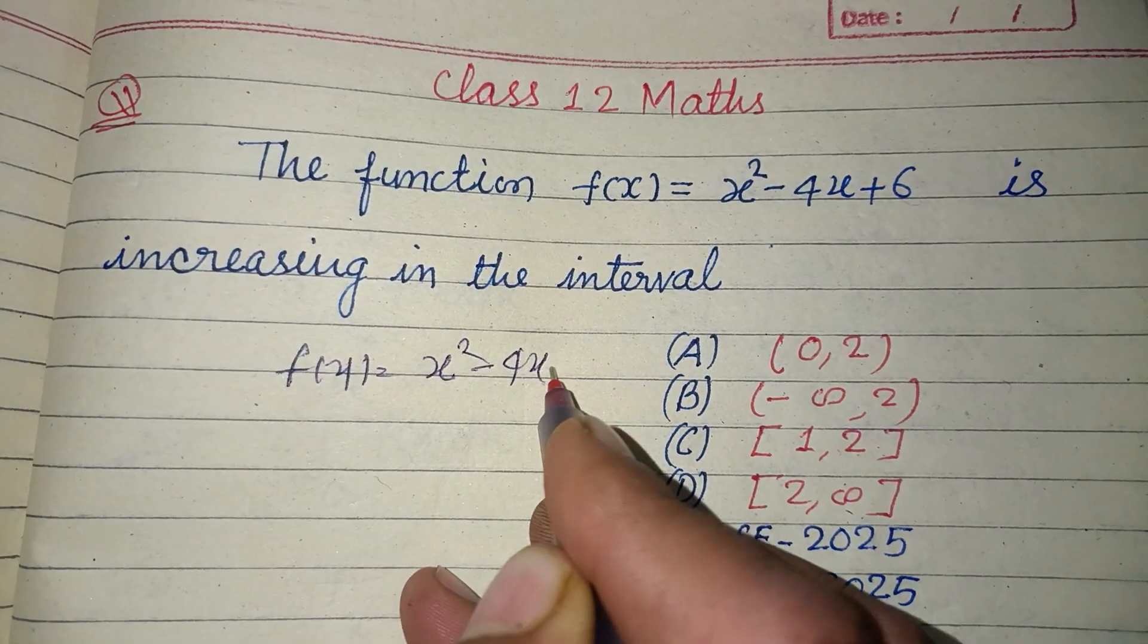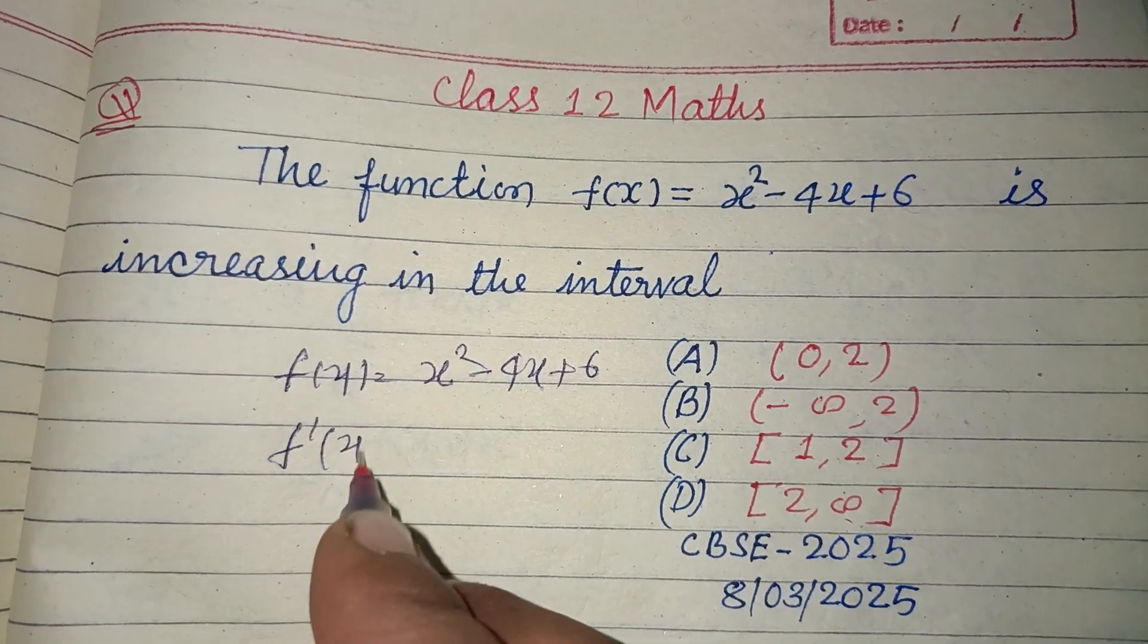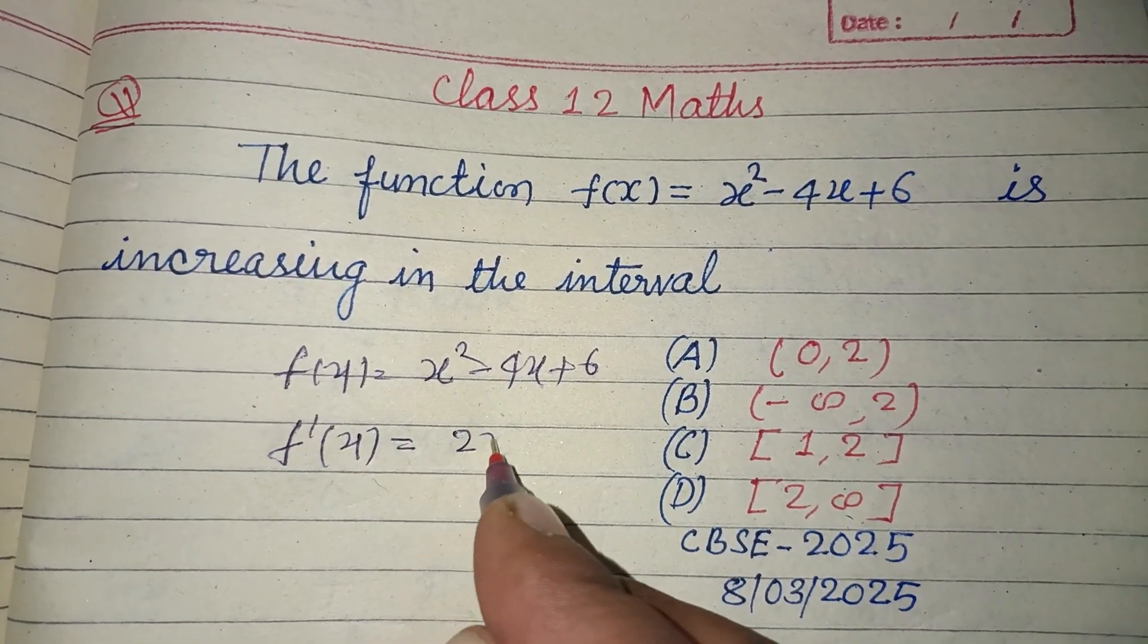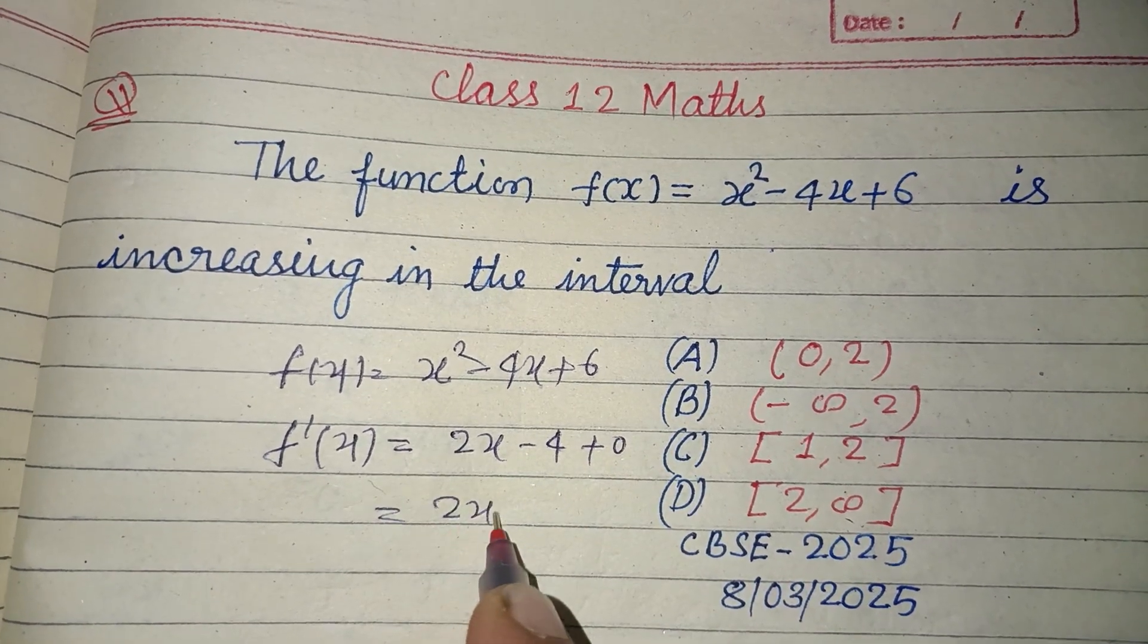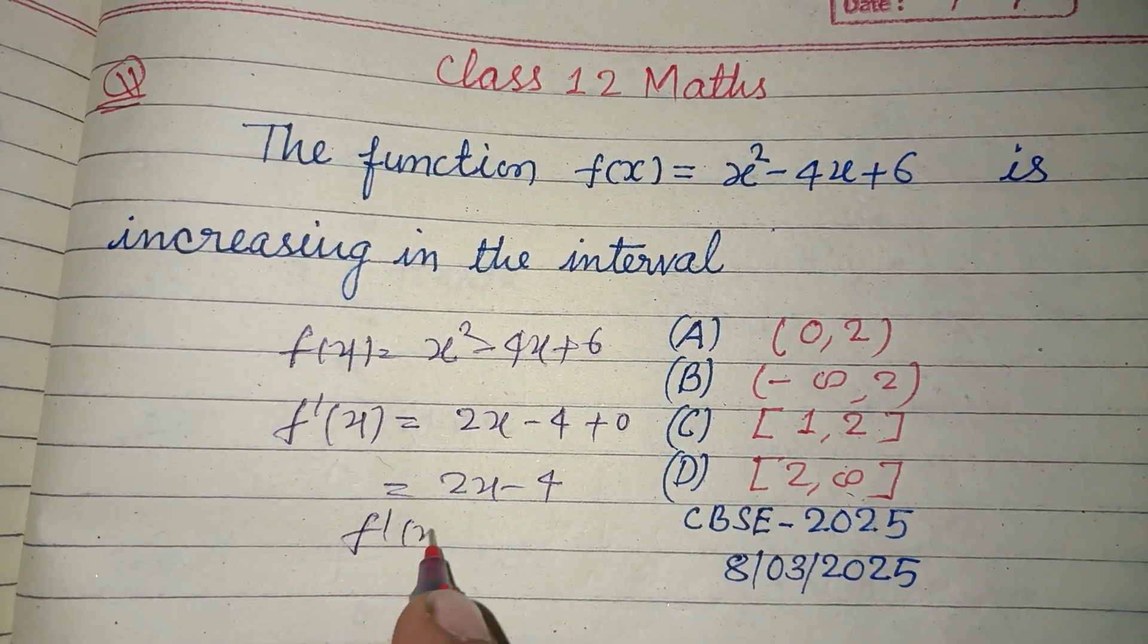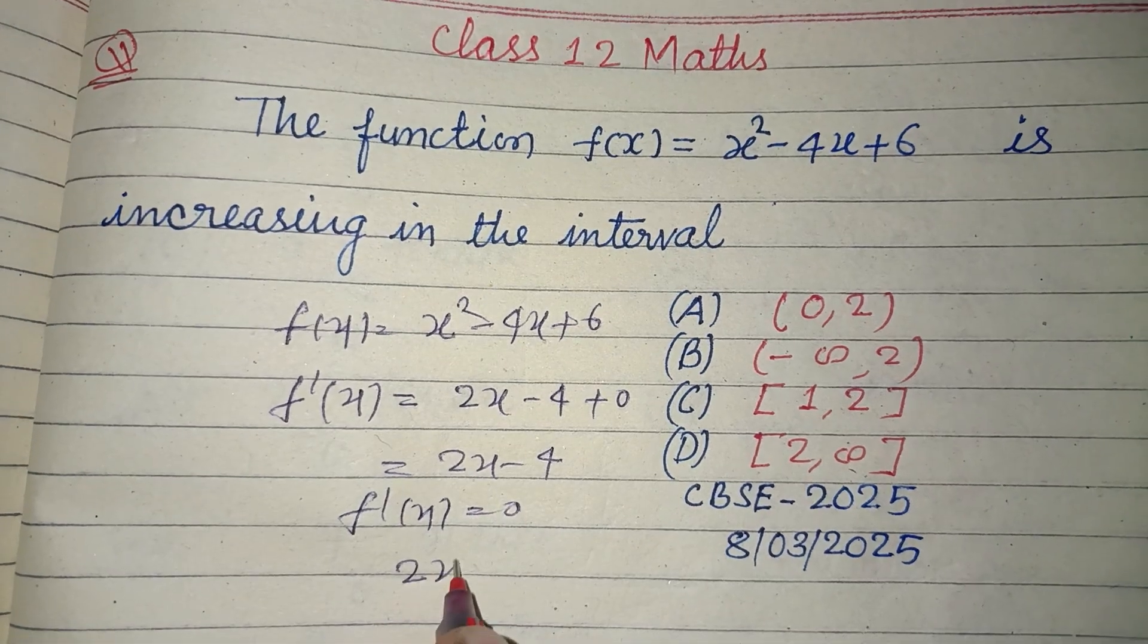Differentiating with respect to x, f'(x) = 2x - 4 + 0, so this is 2x - 4. For increasing function, f'(x) = 0, so 2x - 4 = 0.